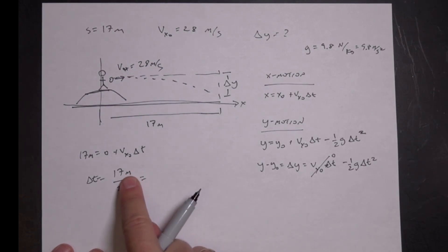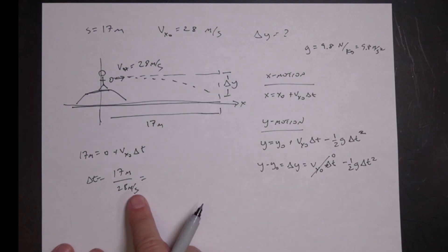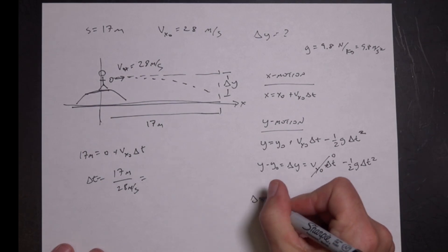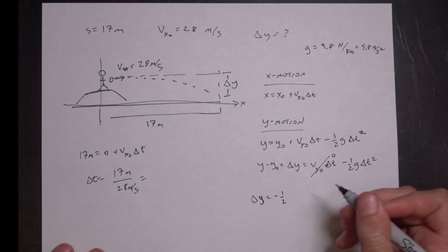So now I know delta t. I can go over here and solve for delta y. Delta y is going to be equal to minus one half g delta t squared.